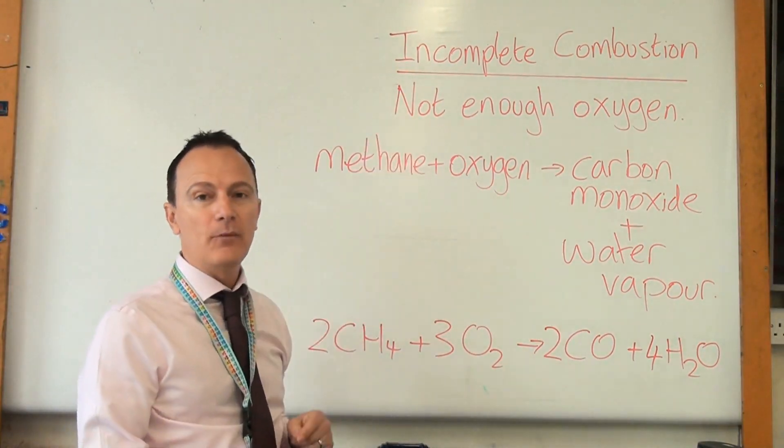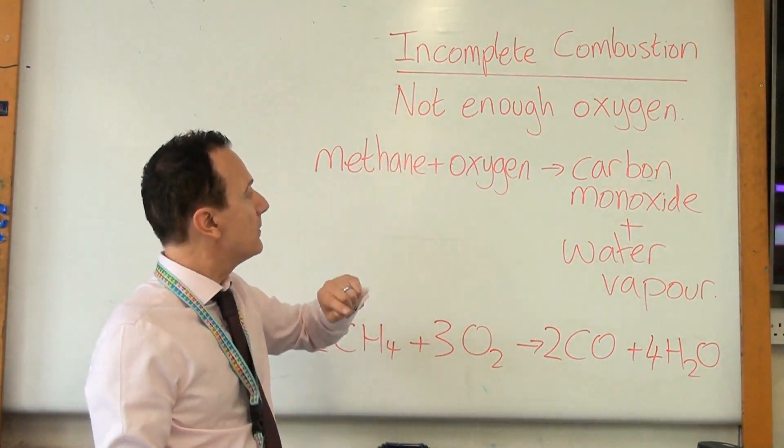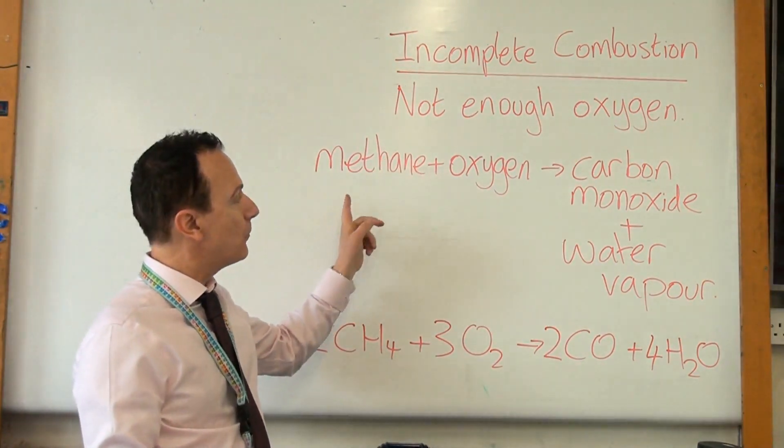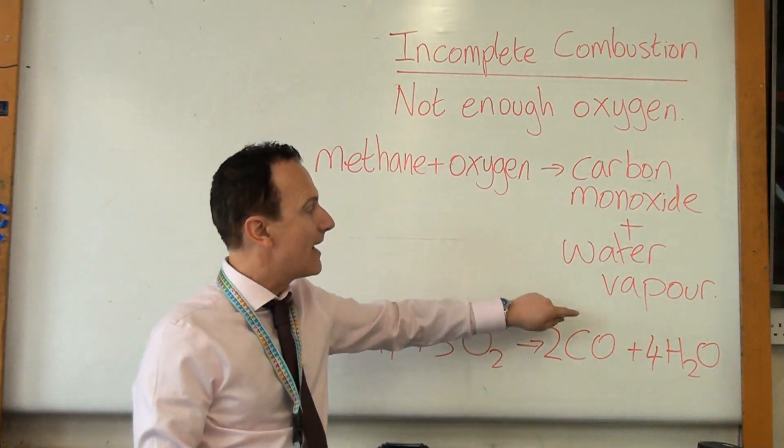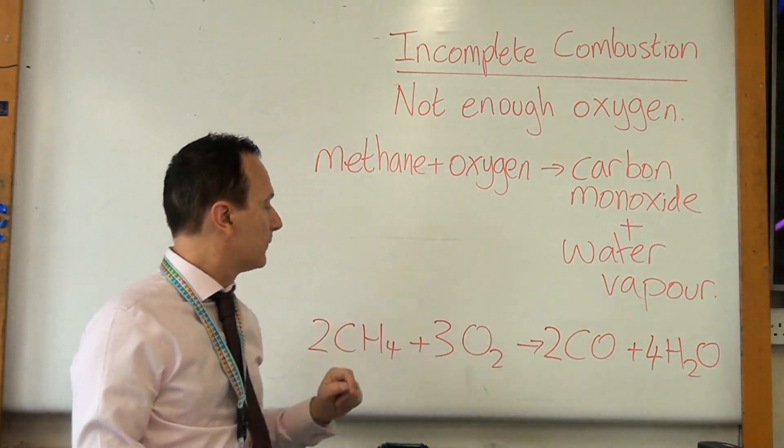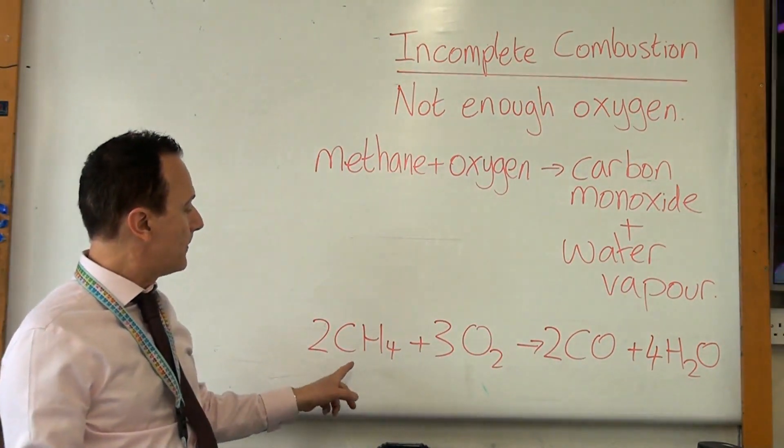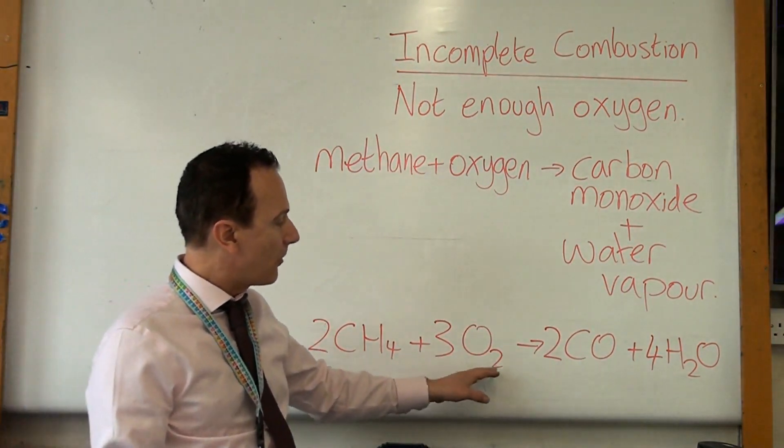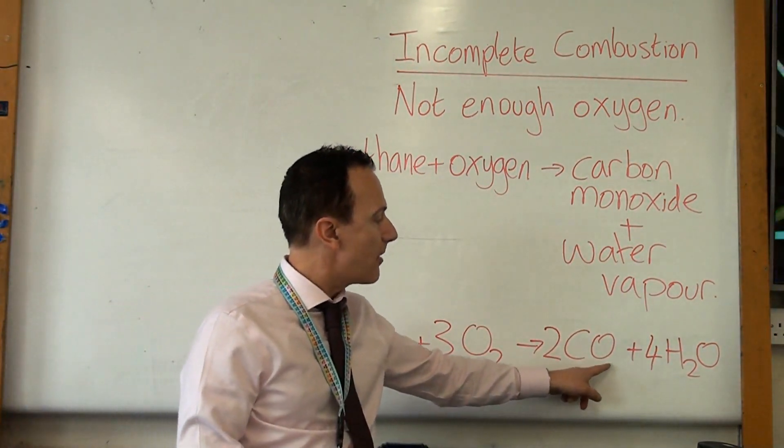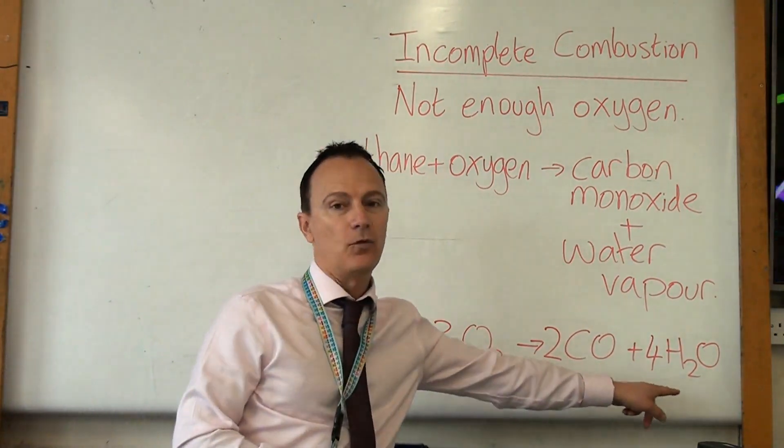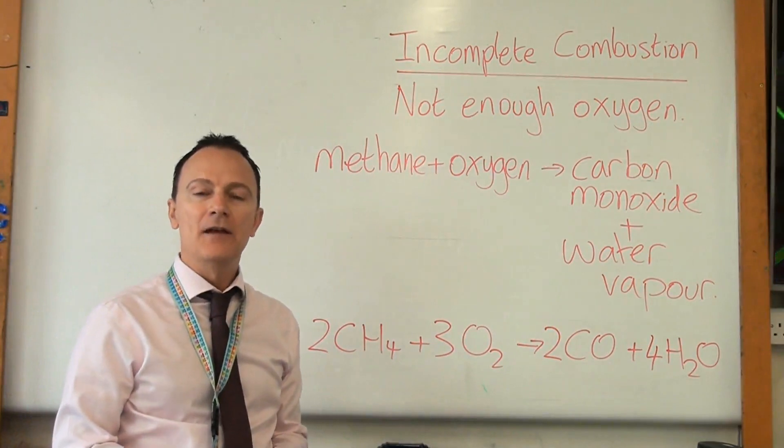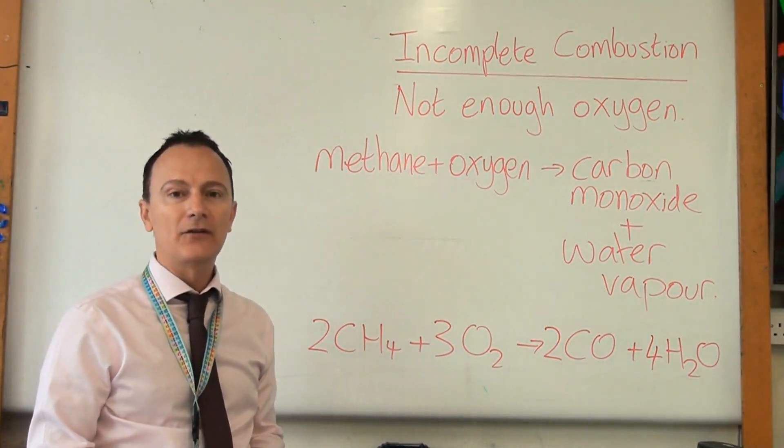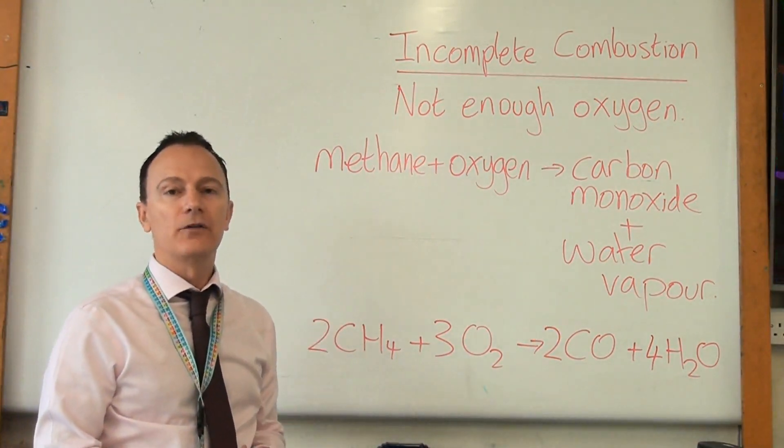So incomplete combustion means there's not enough oxygen so this time the fuel reacts with some oxygen to make carbon monoxide and water vapour. So the equation for this would be methane and oxygen makes the carbon monoxide and water vapour. A little bit trickier to balance this one. If you need more examples of balancing equations I'll put a link up there now to a previous video.